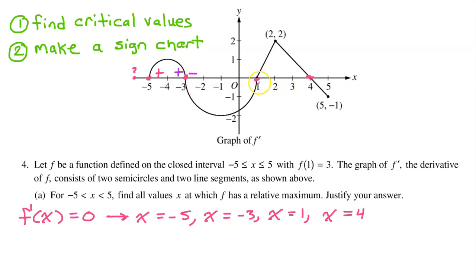Let's jump over to x equals 1. To the left, f prime is negative, below the x-axis. To the right, it is positive, above the x-axis. Now let's jump over to x equals 4. To the left, f prime is positive; to the right, f prime is negative.